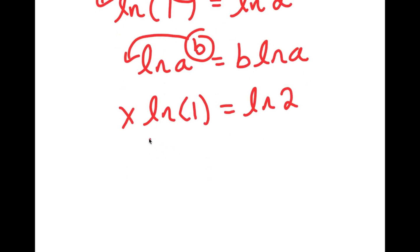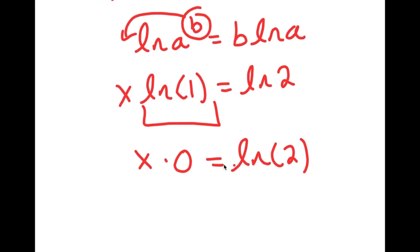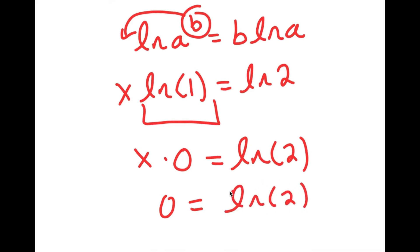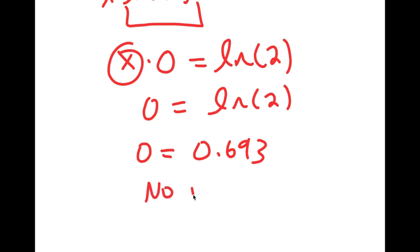Now, ln of 1 is actually equal to 0. So I have x times 0 is equal to ln 2. And x times 0 is 0, so I get 0 is equal to ln 2. Well, ln 2 is equal to 0.693, but there is no solution because the variable x is gone. So this means that there is no real solution.